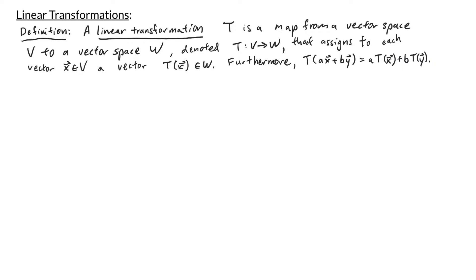In this video, we give a brief overview on linear transformations. Remember that a linear transformation is a map from a vector space V to a vector space W that sends each input vector in V to an output vector in W.